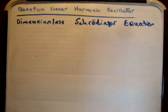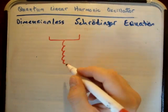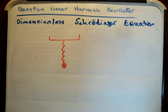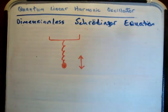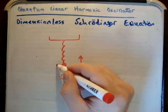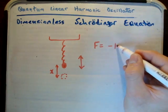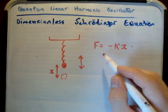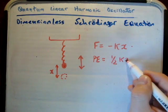Just a quick revision on the linear harmonic oscillator. In terms of classical analysis, we have a ceiling, and on the ceiling we have a spring, and on the spring we have a mass. If you pull down the spring and leave it go, the mass will oscillate or move up and down. If we extend it to here, then our extension is going to be x. We know that F, the force, is equal to minus k, the spring constant, times x, and that the potential energy is equal to one-half the spring constant times x squared.